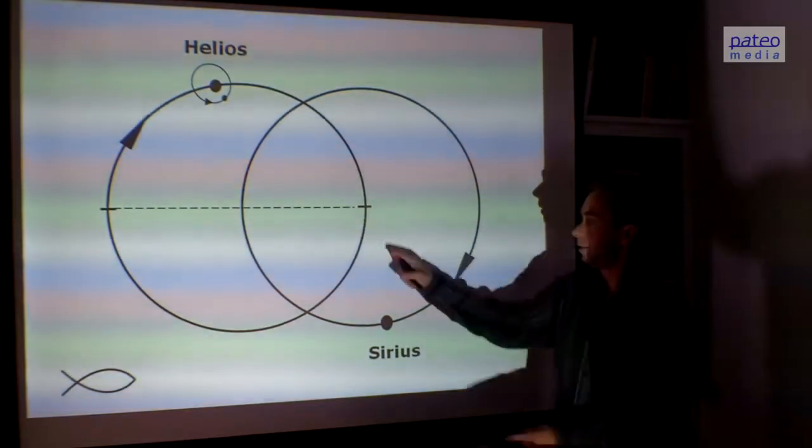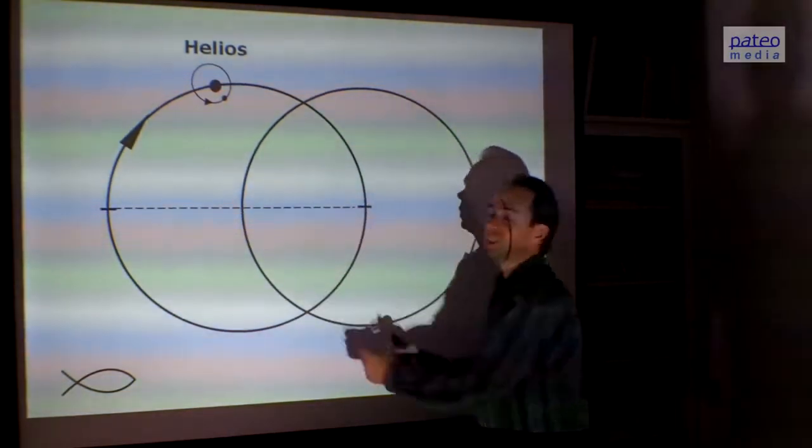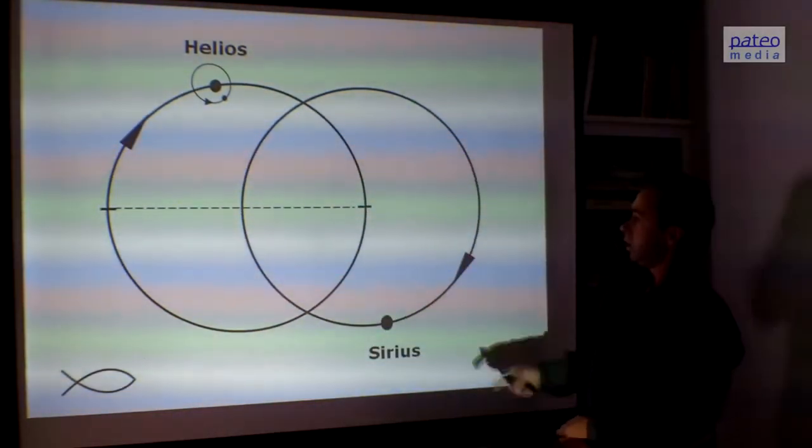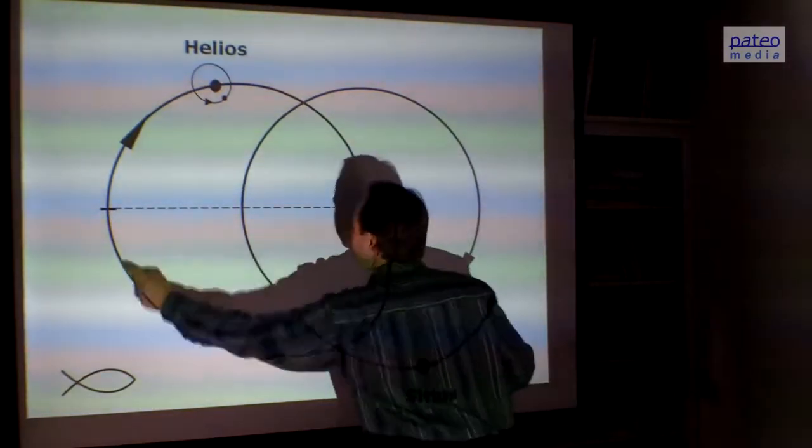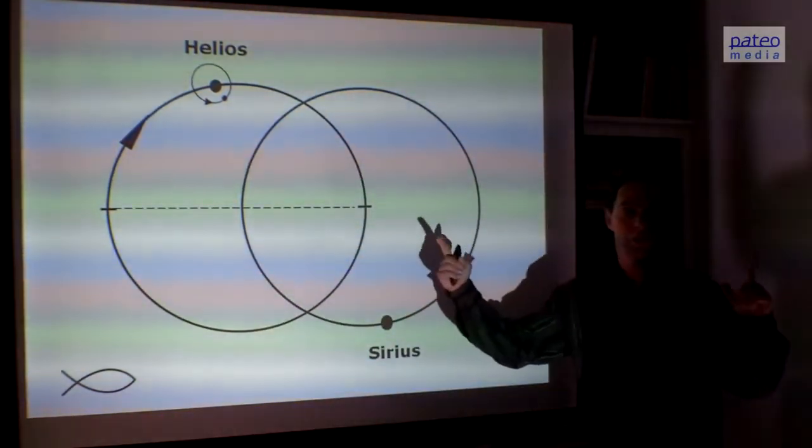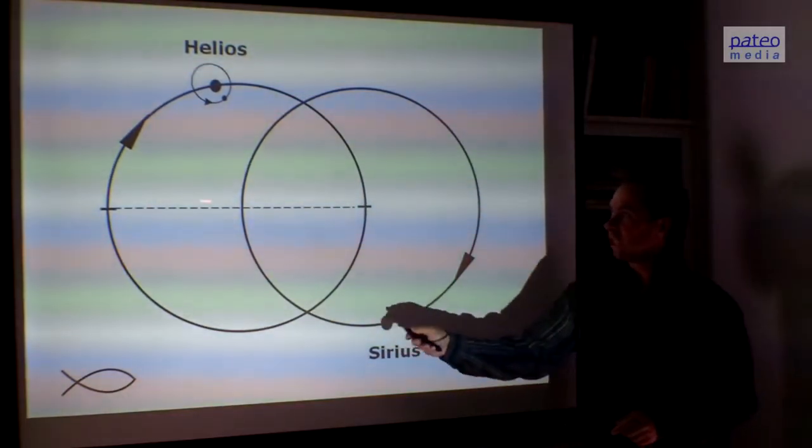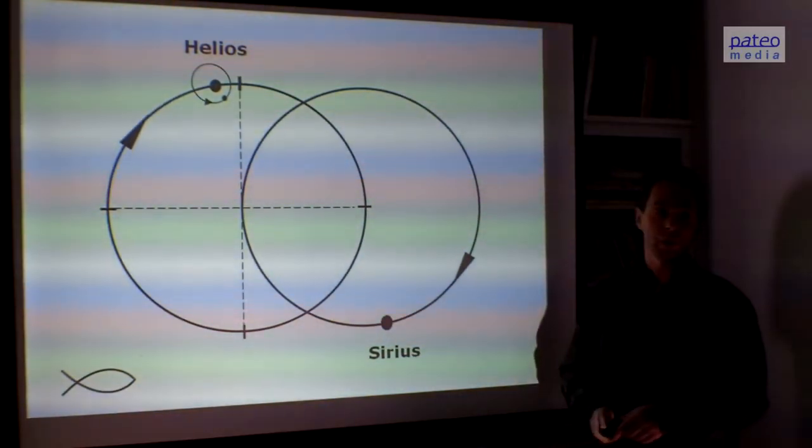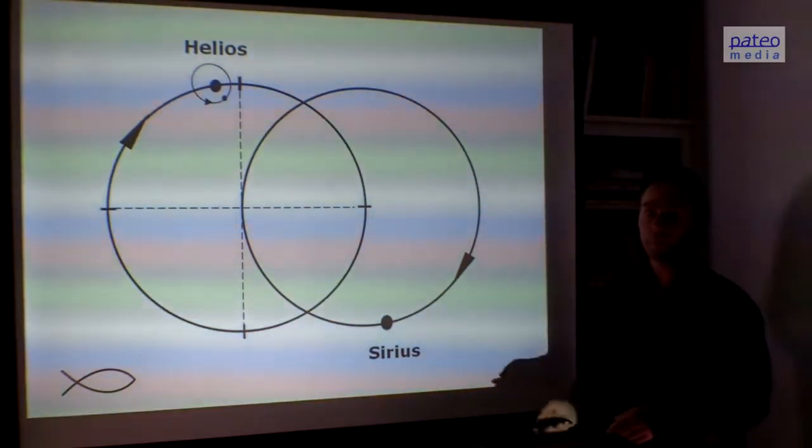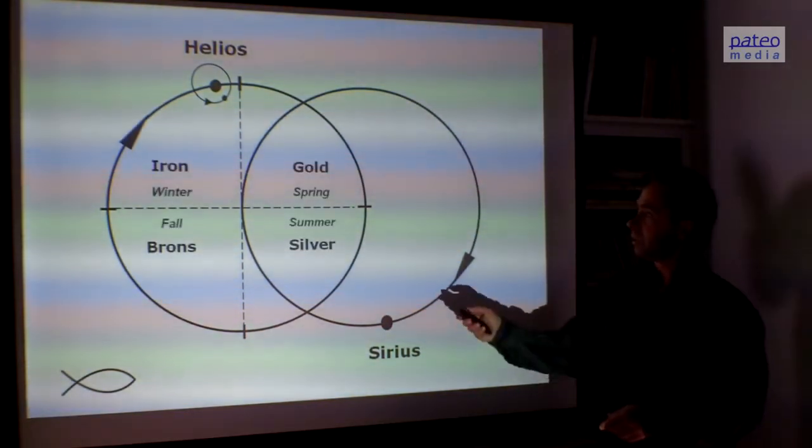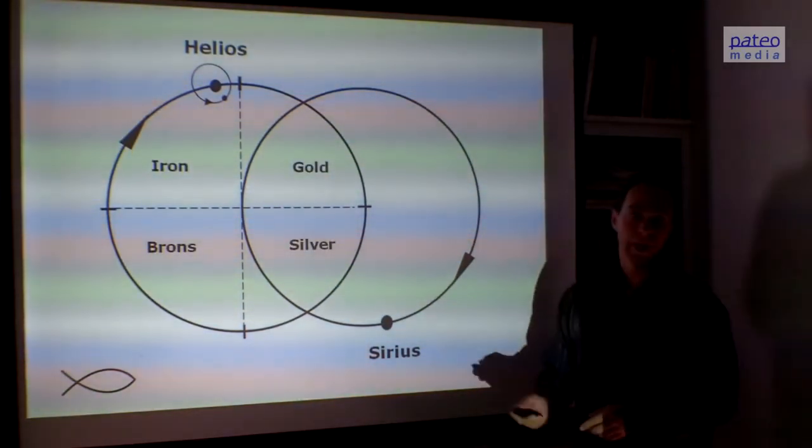At this moment, when Helios is here, then Sirius is here. And then the distance is closest. The other time, when Helios is here, then Sirius is here. And the distance is furthest away. This is a demarcation line. Here we see another one. And we have now four periods. This period is called the Golden Age, the Golden Period.